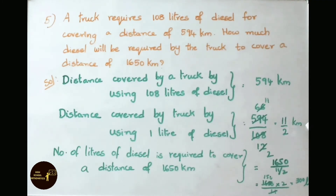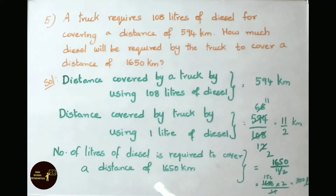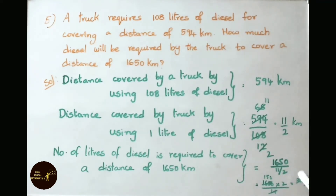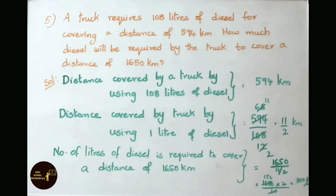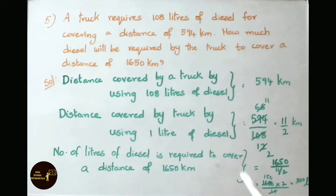The number of liters of diesel required to cover 1,650 kilometers equals 1,650 divided by 11 by 2. Bringing 2 to the numerator gives 1,650 into 2 by 11. 11 times 150 is 1,650, so multiply 150 by 2 to get 300. Therefore, 300 liters of diesel is required to cover a distance of 1,650 kilometers.